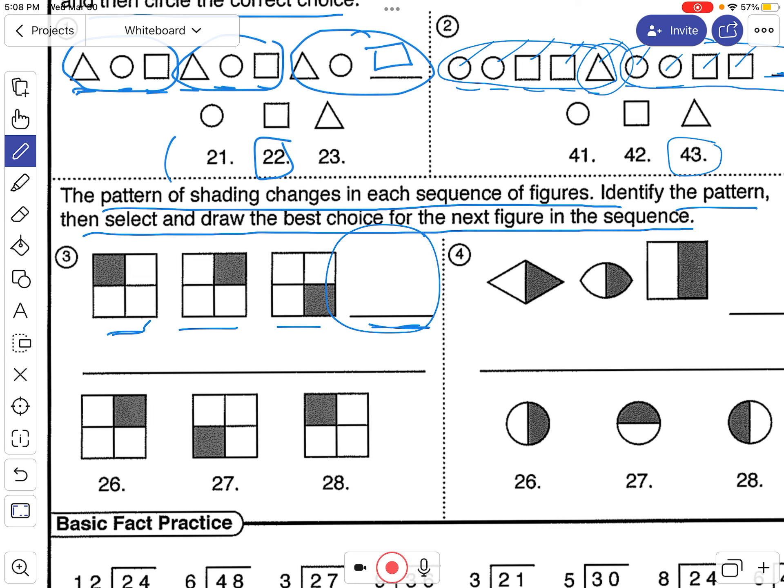Pause the video. Try that one out. And then make sure you pick one of these, too. Okay. So you should have already done this. And you can see we have the shading in the top left. Then it moves to the top right. Then the bottom right.